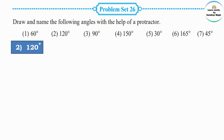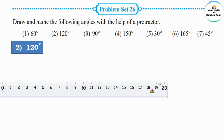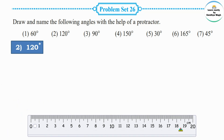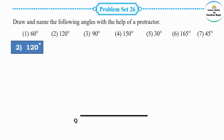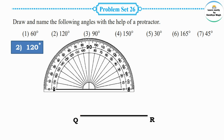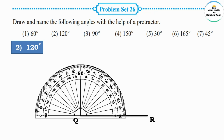The next measurement is 120 degrees. We need to draw a 120 degree angle. First, use the ruler to draw the first arm. The arm is drawn, and the protractor is placed on the right side to start counting.